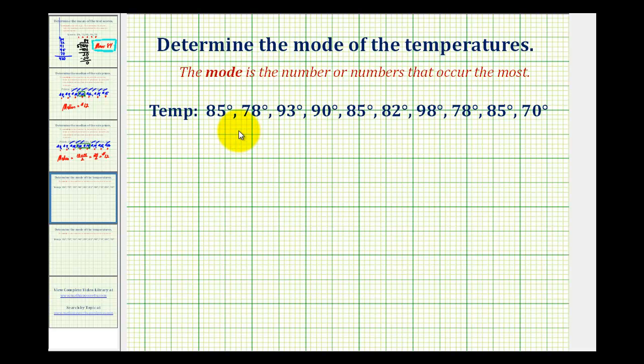Looking at our temperatures here, we want to identify the temperature or temperatures that occur the most. Let's start by taking a look at the temperature of 85 degrees. There's one 85 degree temperature here, here, and here. So 85 degrees occurs three times.